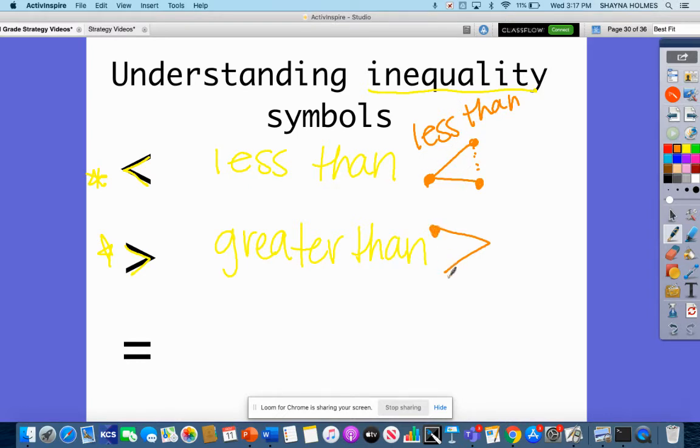Now when you look at this one, you have these large points here. So this right here, this is greater than this point over here. And then obviously this is our equal sign, meaning that whatever we're comparing are the same. They're equal.